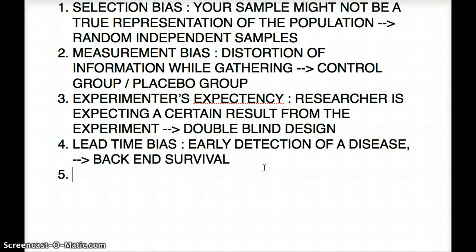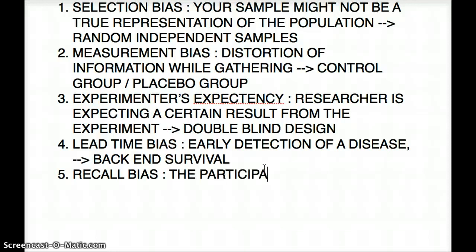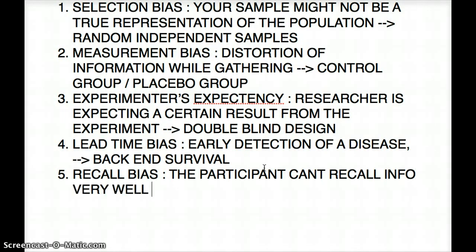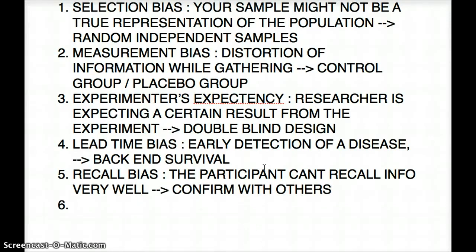The next one is recall bias. In recall bias, subjects or participants cannot remember information accurately. People sometimes get confused — this isn't about a physician recalling a patient, it's that the participant can't recall information very well. How can you beat this? You confirm the information with other reliable sources. Sometimes a patient's relatives or caretakers keep track of things better than the patient themselves.